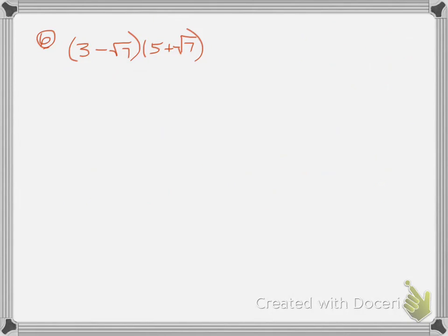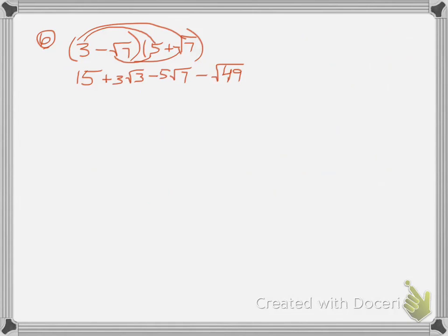One more example. I'm going to FOIL again — multiply twice, distribute twice. I have 3 times 5 is 15. Then 3 times square root of 7. Then 5 times negative square root of 7 — I'll write that as negative 5 square root of 7, because it's really 5 times negative 1 times the square root of 7. Then negative square root of 7 times square root of 7. Positive times negative is negative, giving negative square root of 49. The two middle terms combine since they're the same radical: 3 minus 5 is negative 2 square root of 7.